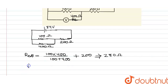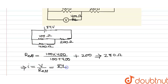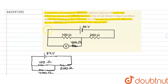Now we can calculate the current flowing through the circuit. Current I equals V divided by R_effective, which is 84 divided by 280, giving us 0.3 ampere. So the current flowing from the battery is 0.3 ampere.